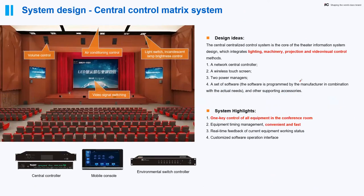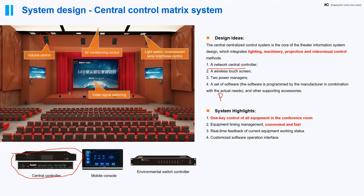We also apply the central control system in the auditorium, because there are numerous devices — sound, air conditioning, lighting, and video signal switching — and all this controlling must be centralized by one device. We apply this centralized center control system: just one network center controller to control all devices, including speaker volume, air conditioning, light switches, video switching for the screen, and third-party device control. As long as the third-party device supports RS-232 or RS-485 protocol, the system can control it.